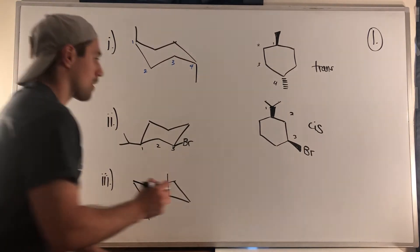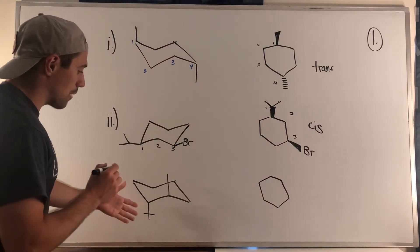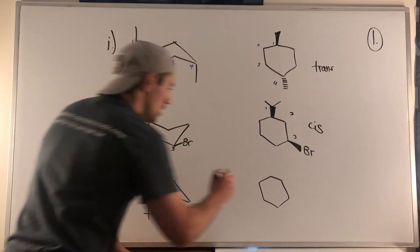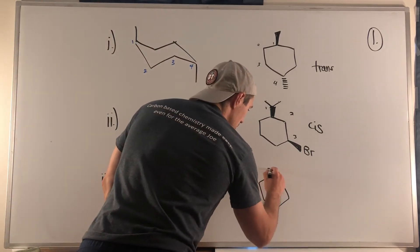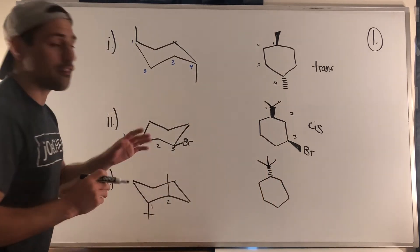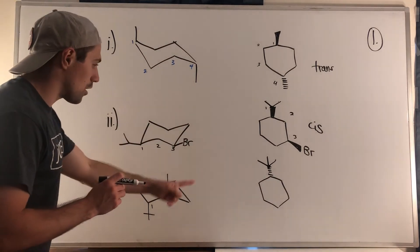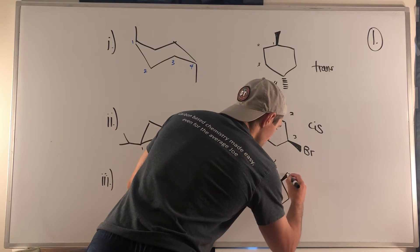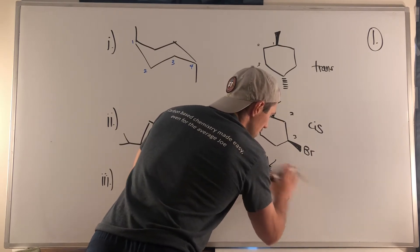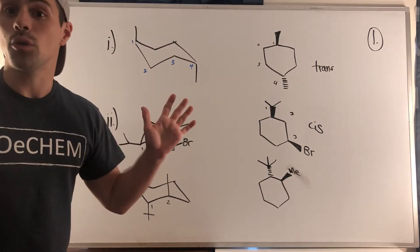Sub-problem three: we have a trans situation, one-two relationship. On position one we have a t-butyl group — don't be thrown off by where the dash meets the straight line, that is a carbon. And on position two, the methyl group is wedged. You can add CH3 or 'Me' here if you want, or leave it — that's totally fine.